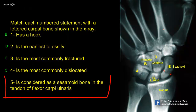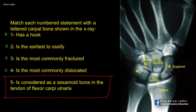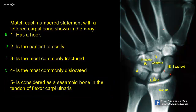Five is considered as a sesamoid bone in the tendon of flexor carpi ulnaris. The carpal bone considered to be a sesamoid bone in the tendon of flexor carpi ulnaris is the pisiform bone — it is the most medial of the first row of carpal bones. Flexor carpi ulnaris is attached to the pisiform bone, from which pisohamate and pisometacarpal ligaments carry the insertion more distally.